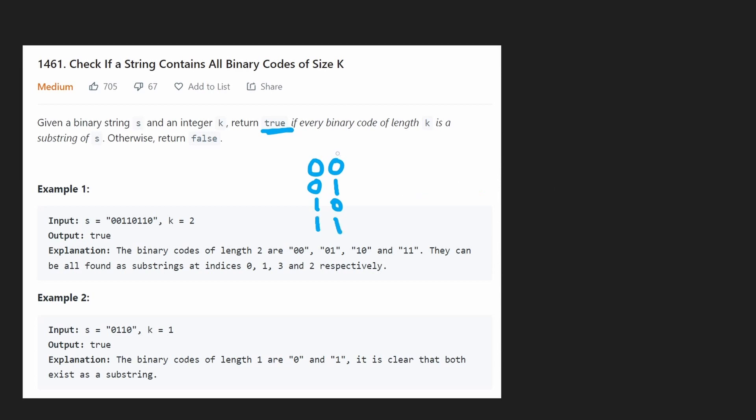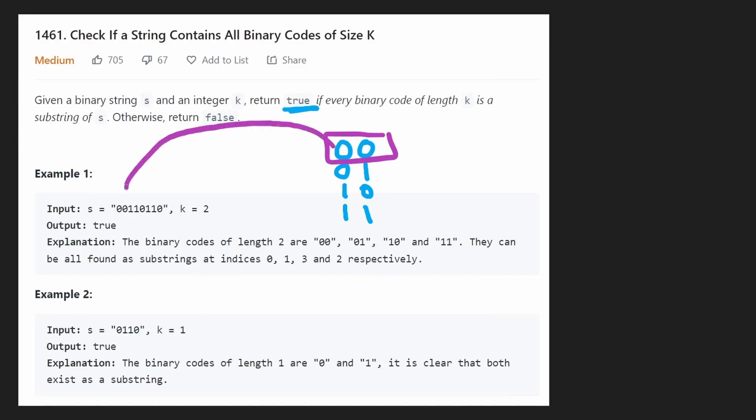So a naive way that we could solve this problem is take every single code that we can create and then check every single substring of S with this code until we find it. Now, luckily we find it right at the beginning, 00. So, okay, we know that this already exists in S. Let's look for the other three codes. Do they also exist in S? If they do, we can return true. If they don't, we return false.